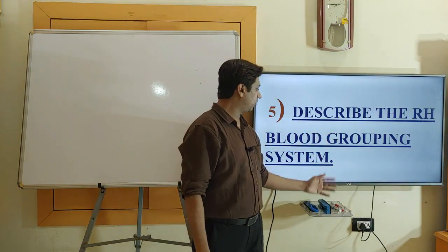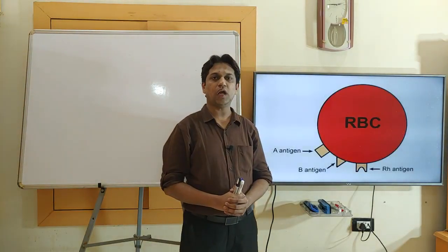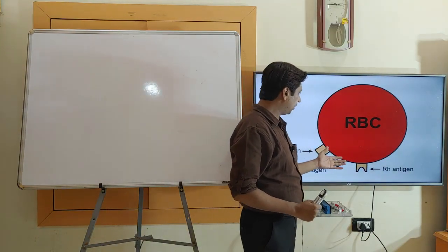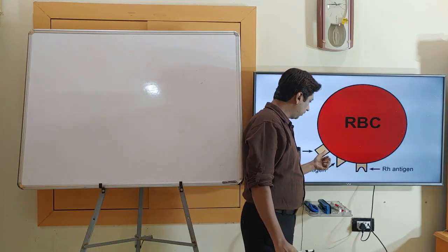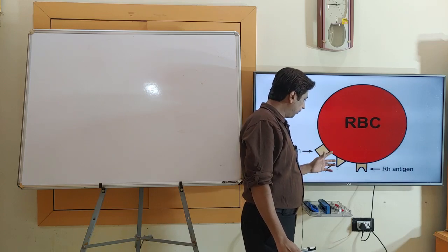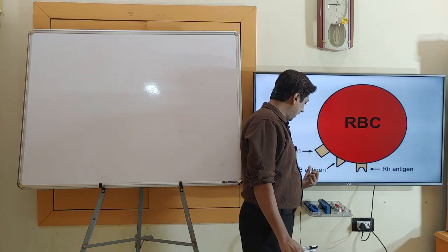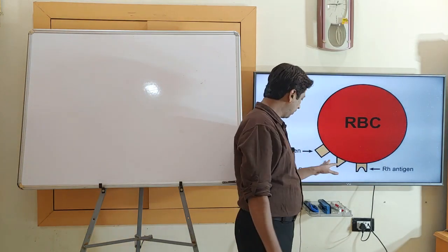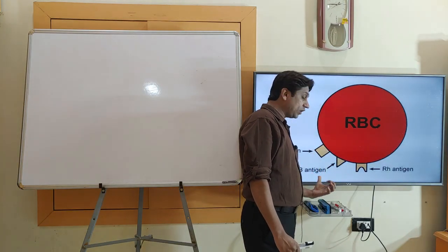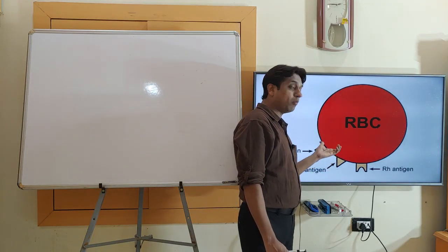The fifth objective is to describe the RH blood grouping system. Before that, let us quickly revise the ABO blood grouping system. It is based on the presence or absence of antigen A or antigen B on the surface of an RBC. If antigen A is present, it is designated as A blood group; if B is present, B blood group; if both are present, AB blood group; and if both are absent, O blood group.